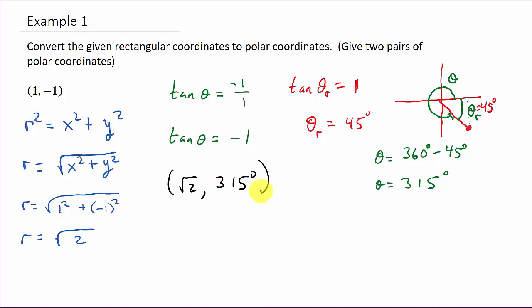There's several different answers. But I just like to put the answer where r is positive and my angle is positive. Now let's look at another answer. Well, another answer would be square root of 2. Now notice with 315, I rotated around 315. That's a positive angle.